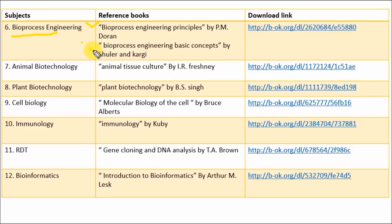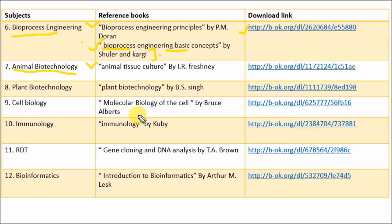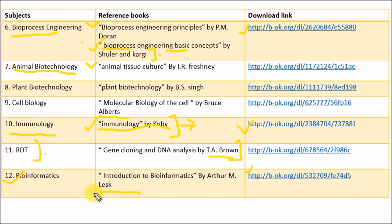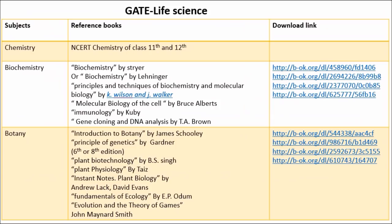For Bioprocess Engineering, refer Bioprocess Engineering Principles by P.M. Doran. If you have a Life Science background rather than an engineering background, refer Bioprocess Engineering: Basic Concepts by Shuler and Kargi, as this book is designed for life science students — download links are provided. For Animal Biotechnology, refer Animal Tissue Culture by I.R. Freshney. For Cell Biology, refer Molecular Biology of the Cell by Bruce Alberts. For Immunology, refer Immunology by Kuby. For Gene Cloning and DNA analysis, refer Gene Cloning and DNA Analysis by T.A. Brown. For Bioinformatics, refer Introduction to Bioinformatics by Arthur Lesk. For GATE Biotechnology practice, refer MCQs from Pathfinder Publication and the Test Bank from Campbell Biology.